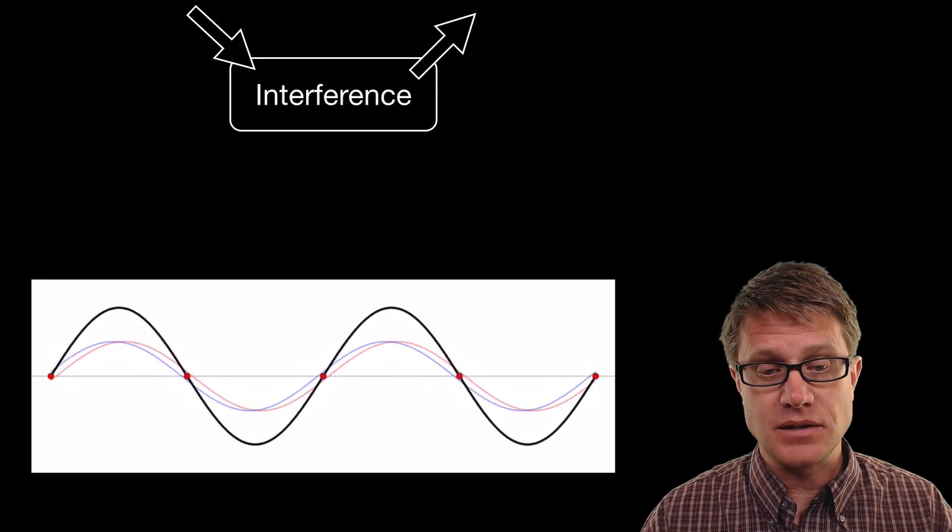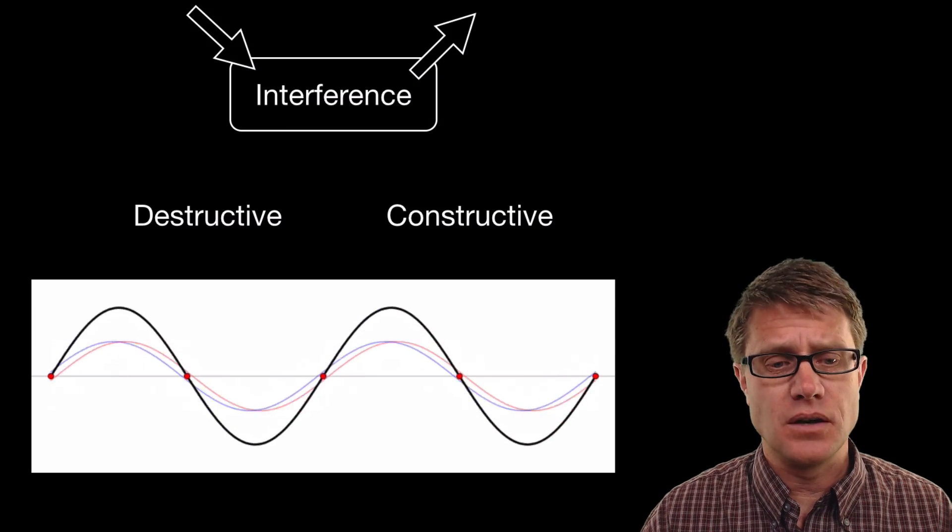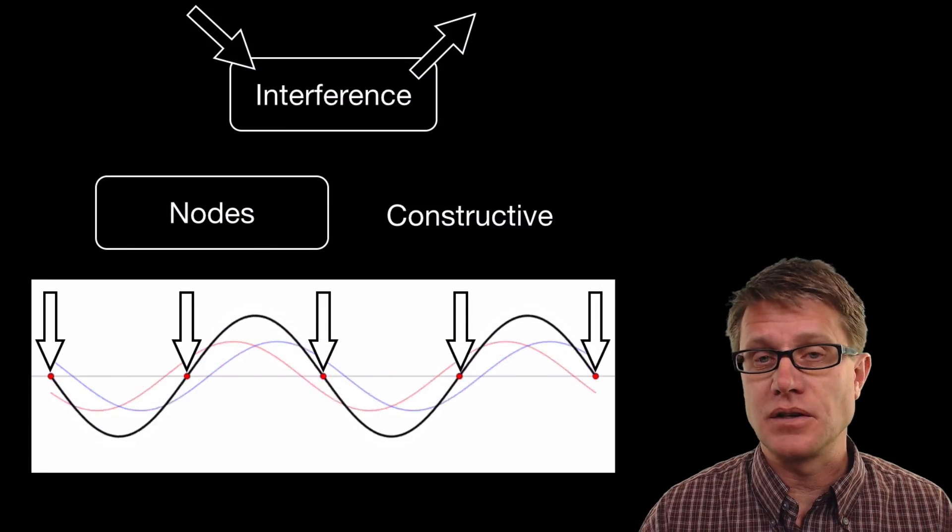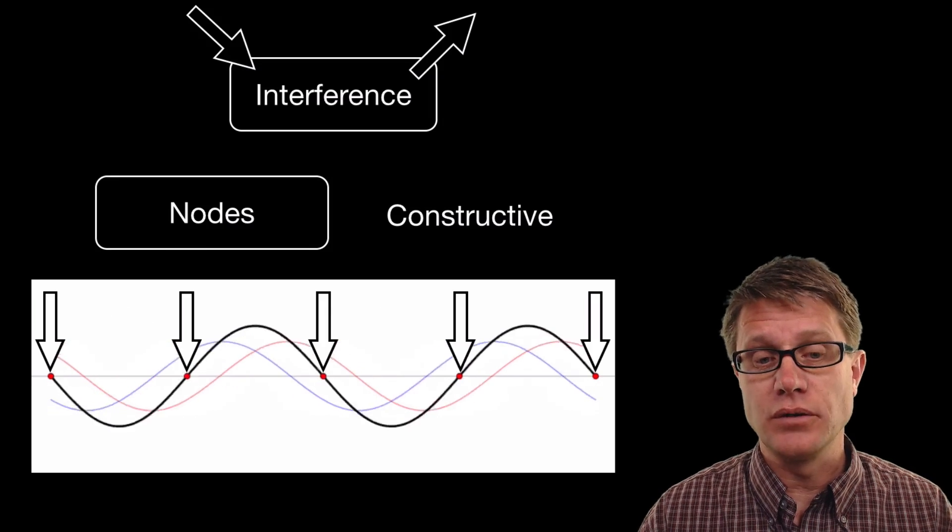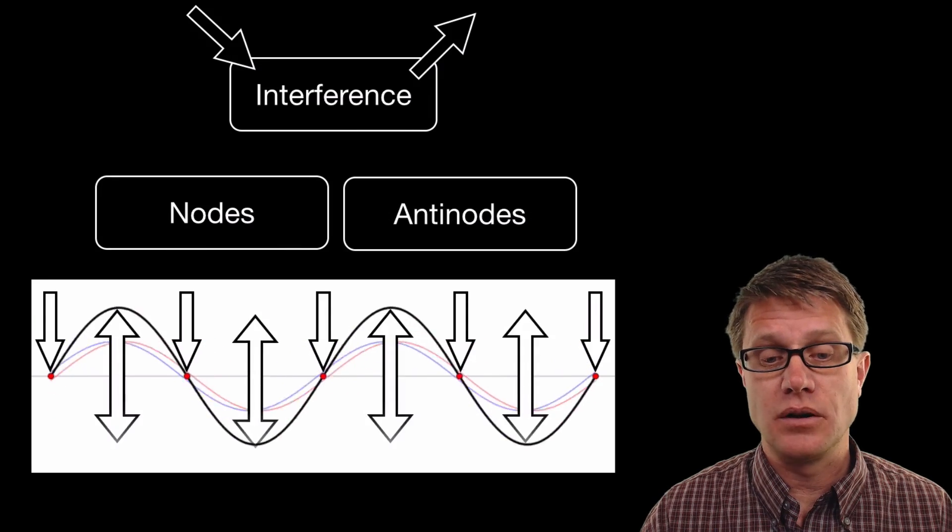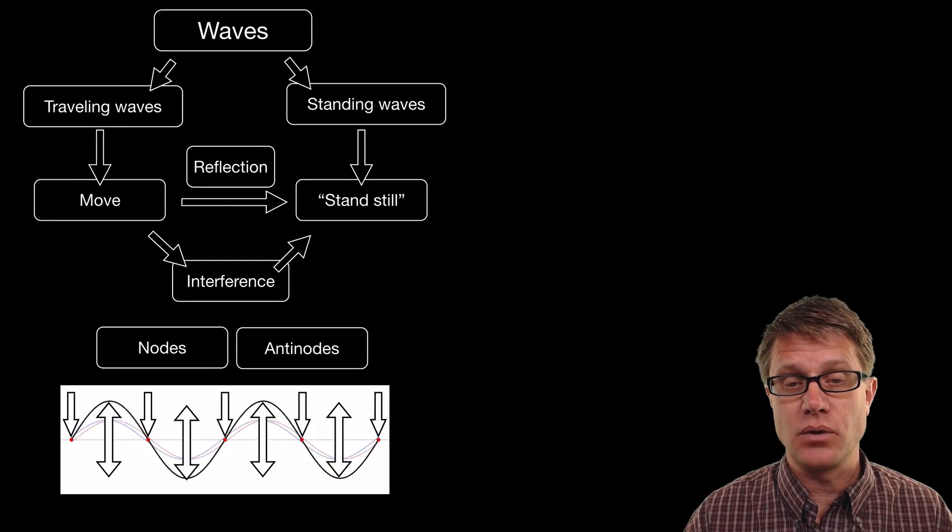Now if you notice that standing wave is going to have areas where it is not moving at all. And that is due to destructive interference, where the waves are canceling each other out. And we call those in physics nodes, areas where it is not moving. And then we are going to have total constructive interference in certain areas. And we call those anti-nodes. That is where it is moving the maximum amount back and forth and back and forth.